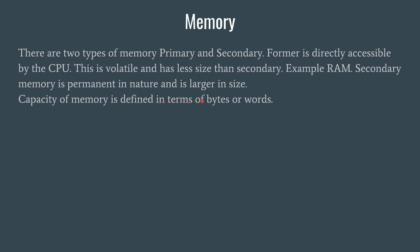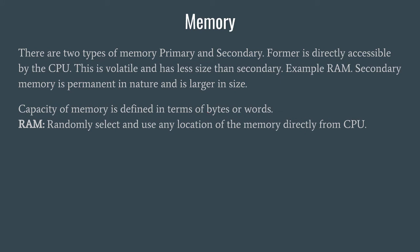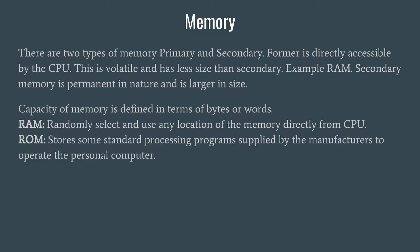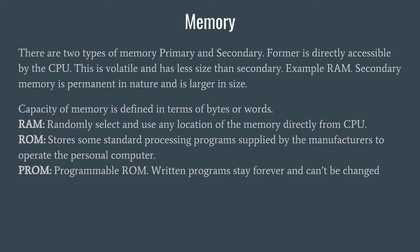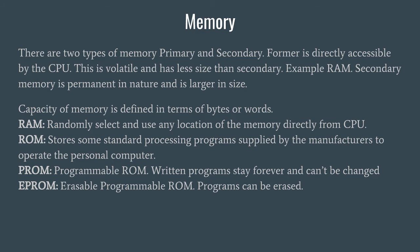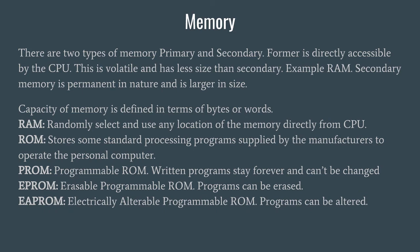RAM is Random Access Memory. ROM is Read-Only Memory. PROM (Programmable ROM) means programs written onto it stay forever and cannot be altered. EPROM (Erasable Programmable ROM) means if you want to store a new program, you must completely erase the first one before rewriting. EEPROM (Electrically Alterable Programmable ROM) allows you to electrically alter only specific sections of the previous program without completely erasing it, modifying it as needed.